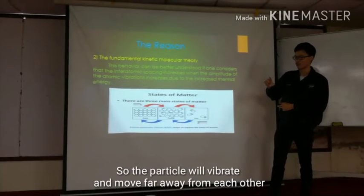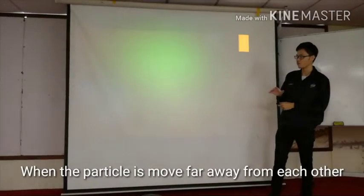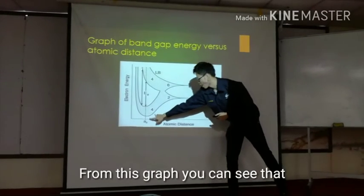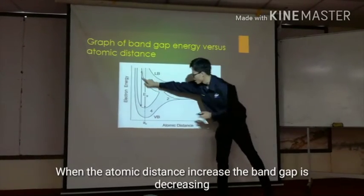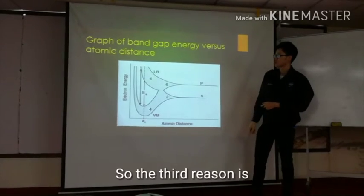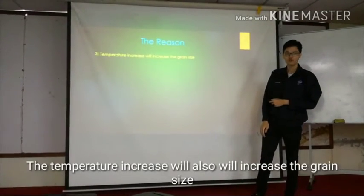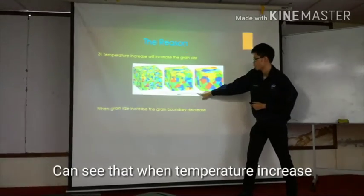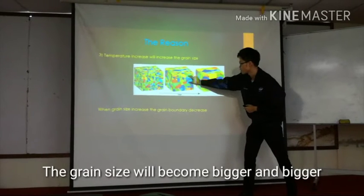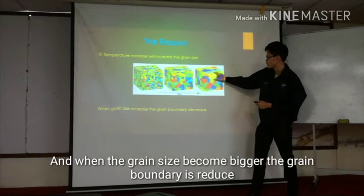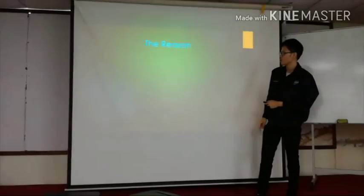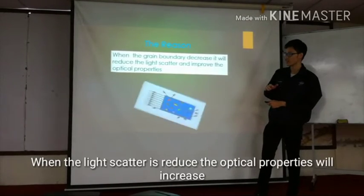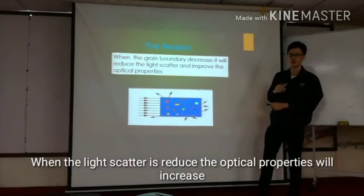The particles will vibrate and move far away from each other. When the particles move far apart, the atomic distance increases, and the band gap of the thin-film increases. The third reason is that increased temperature also increases grain size — the grain size becomes bigger and bigger. When the grain size is bigger, the grain boundary will reduce. When the grain boundary decreases, it will also reduce light scattering, and the optical properties will decrease.